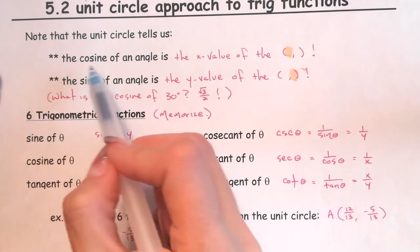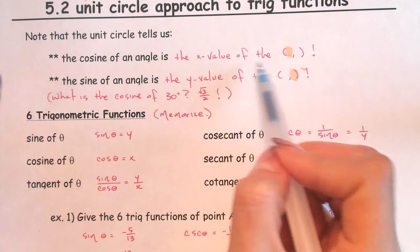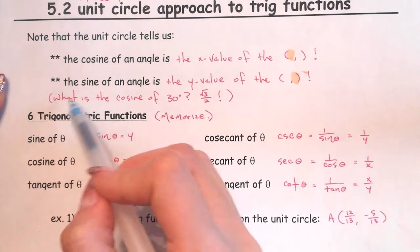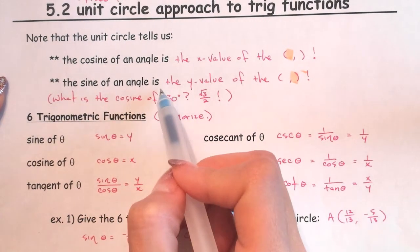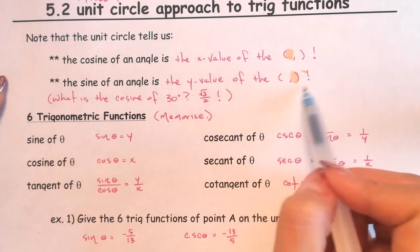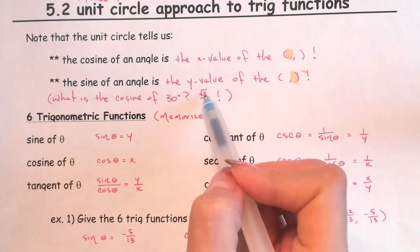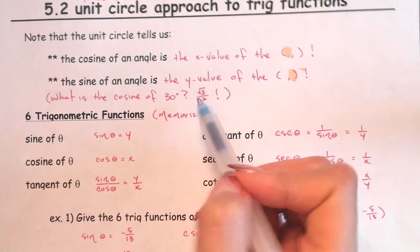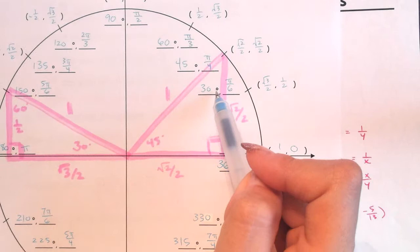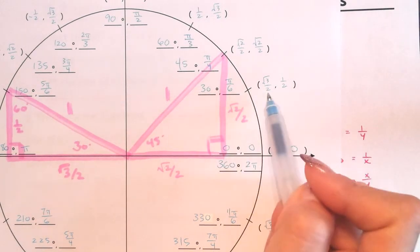The cosine of an angle is the x value of that coordinate. The sine of an angle is the y value of that coordinate. So what is the cosine of 30 degrees? It's root 3 over 2. The cosine of 30 degrees is the x value of that coordinate.